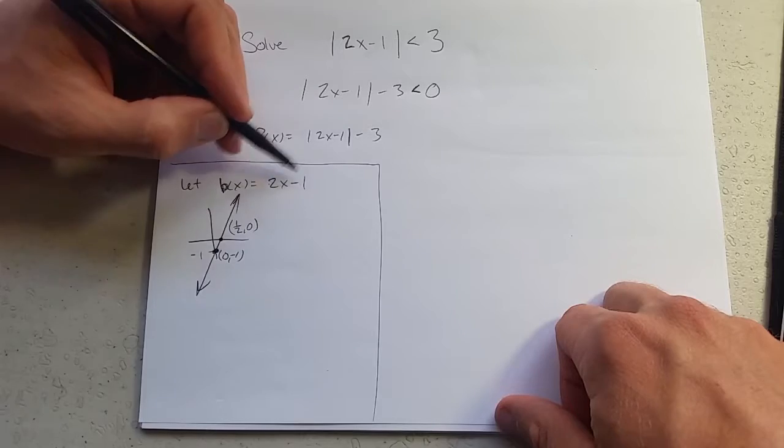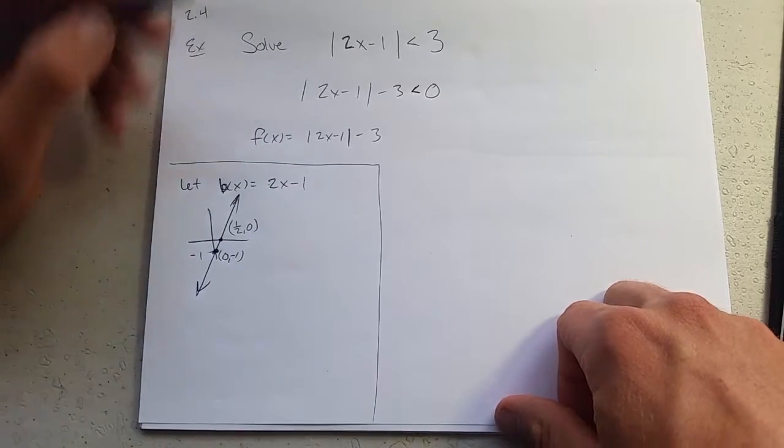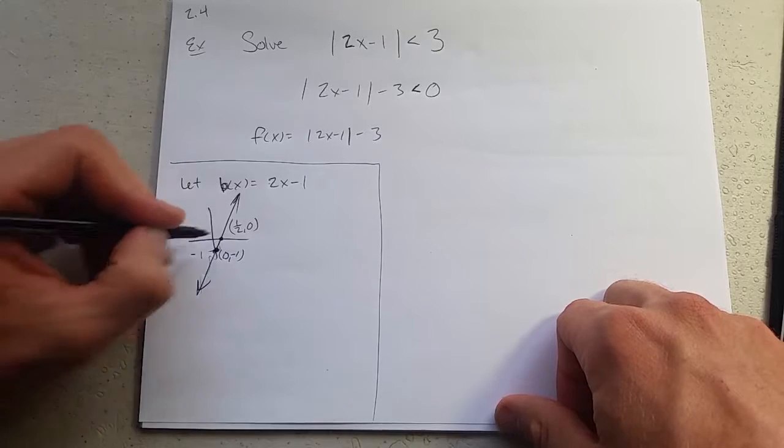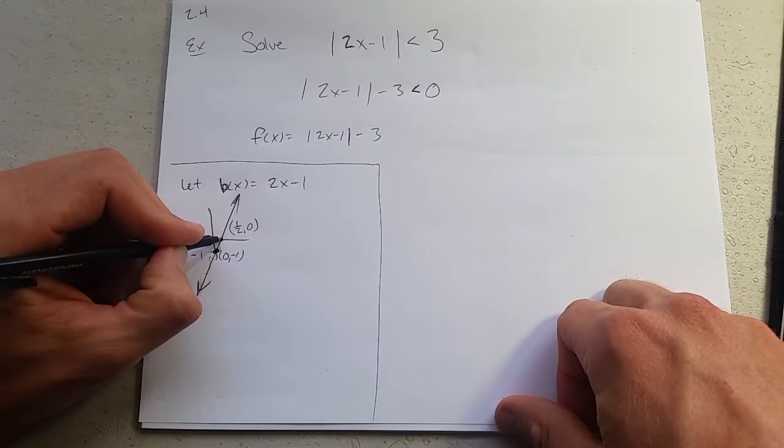I don't want b of x. I really want the absolute value. What does that do? It's going to take this negative part, get rid of it, and make it positive.